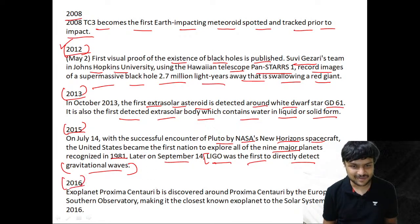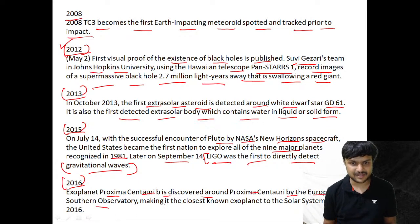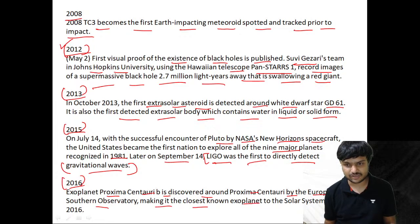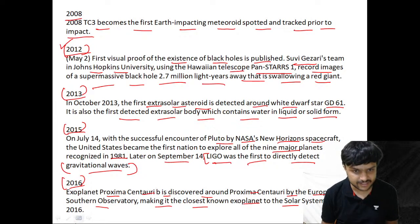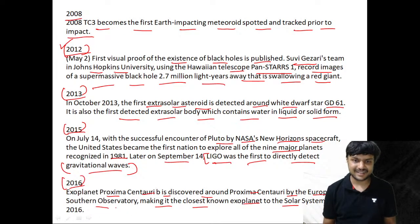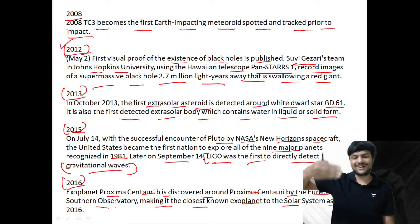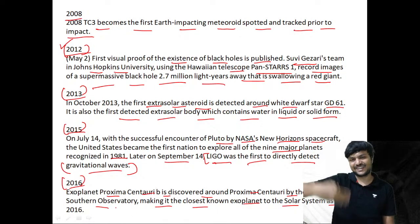In 2016, exoplanet Proxima Centauri b is discovered around Proxima Centauri by the European Southern Observatory, making it the closest known exoplanet to the solar system.